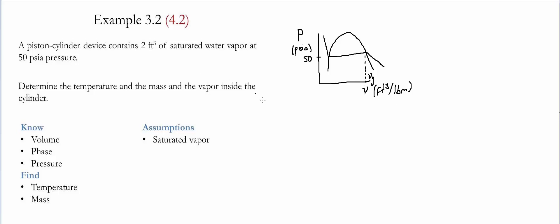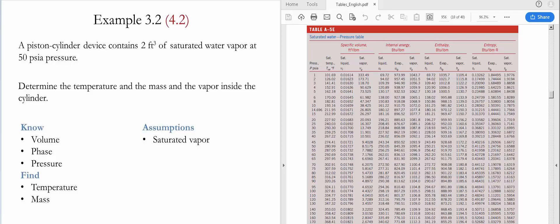To obtain these values, we're going to go to the saturated water tables. Since this is English units, we're going to Table A5E. When we look at the table, we go to the pressure of 50 psia and we find that the saturated temperature T_sat is equal to 280.99°F. In the same line, we find that the specific volume for saturated water vapor v_g is given as 8.5175 ft³/lbm.